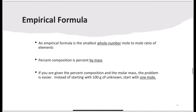An empirical formula is the smallest whole number multiple ratio of the elements. Percent composition is percent by mass. We use this information to solve empirical and molecular formulas from experimental data. One hint: if given both percent composition and the molar mass, it's even easier — instead of starting with 100 grams of unknown, we start with one mole.